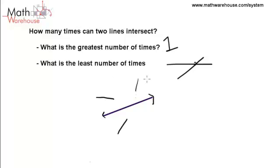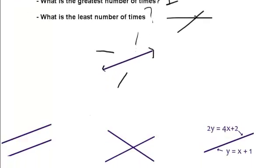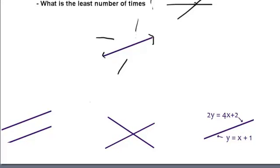What about the least number of times? Is it possible to get a number less than one, or is it possible for two lines to never meet? And the answer is yes. If you just look at a picture, or maybe you already figured it out, it is possible for this situation to occur.